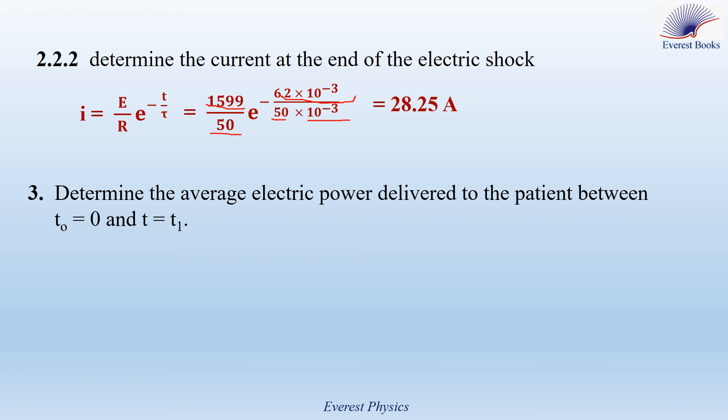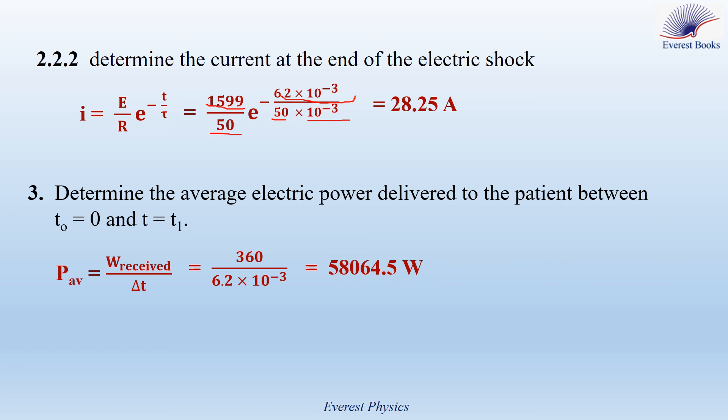Part 3: Determine the average electric power delivered to the patient between time 0 and time T1. The average power equals the energy received by the patient divided by the duration: P_avg = W / ΔT = 360 / (6.2 × 10⁻³) = 58064.5 watts.